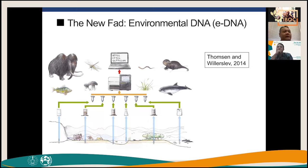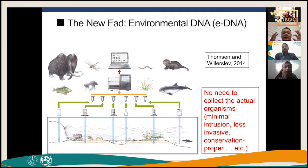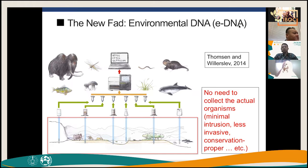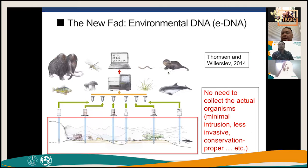There are many discrepancies that don't support each other. A new popular method is environmental DNA (eDNA) — you don't collect actual individuals, just the environmental matrix where organisms live: soil, seawater. Like how we shed skin and hair, organisms leave DNA in their environment. It's less intrusive and non-invasive, but you still need a registered DNA database for identification.